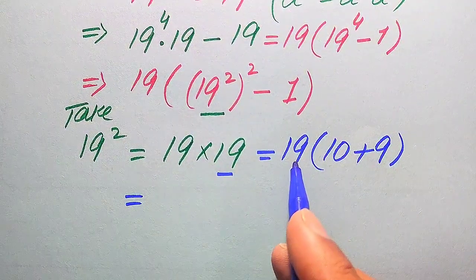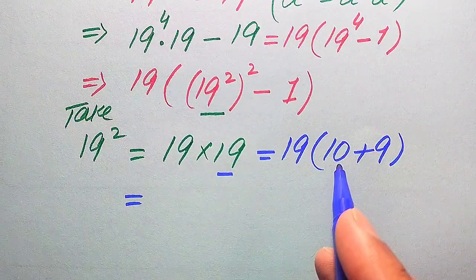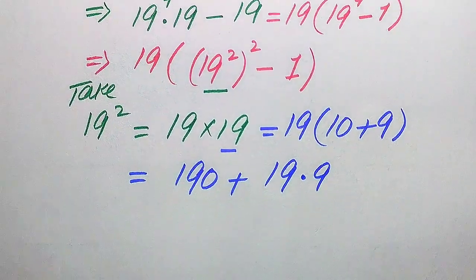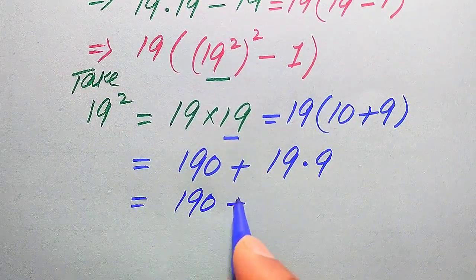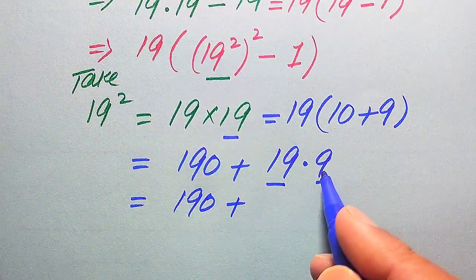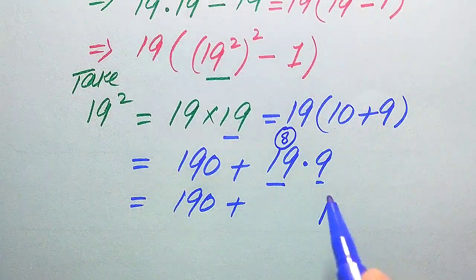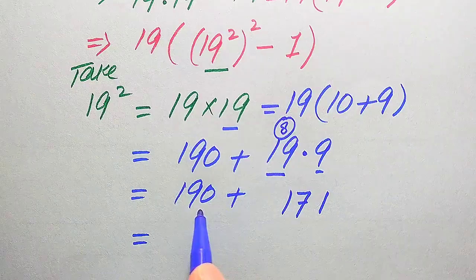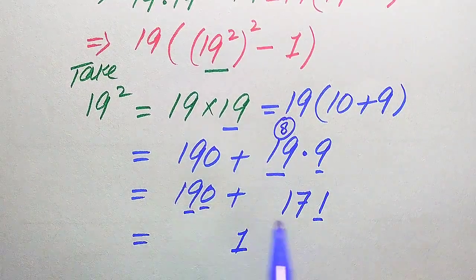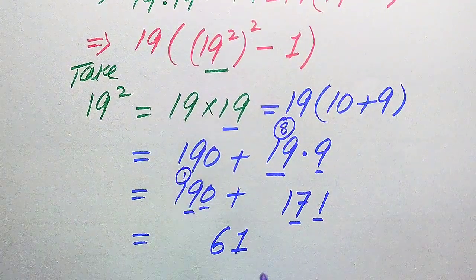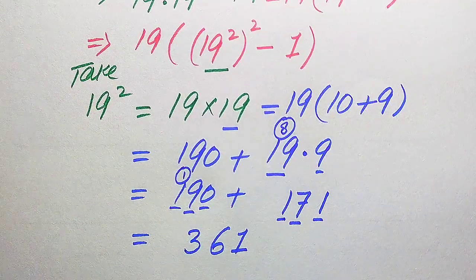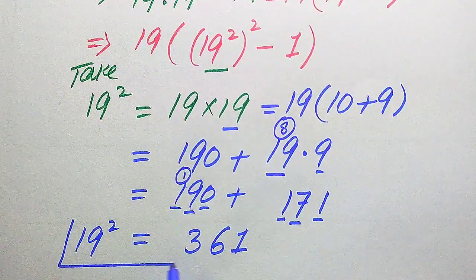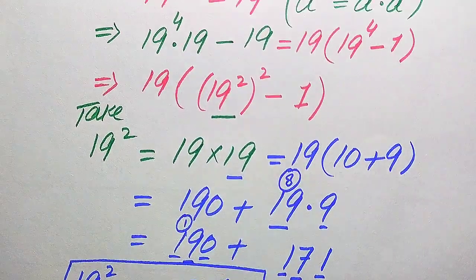We multiply 19 separately on both values: 19 times 10 equals 190, and 19 times 9 — we multiply digit by digit: 9 times 9 is 81, write 1 carry 8; 9 times 1 is 9, plus 8 is 17. Summing up: 0 plus 1 is 1, 9 plus 7 is 16 write 6 carry 1, 1 plus 1 is 2, 2 plus 1 is 3. So 19 squared equals 361.